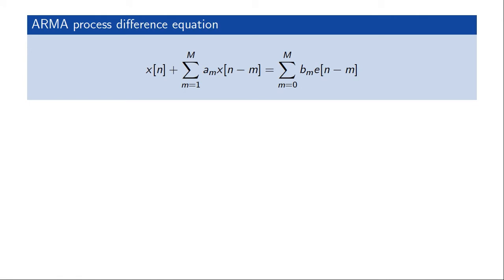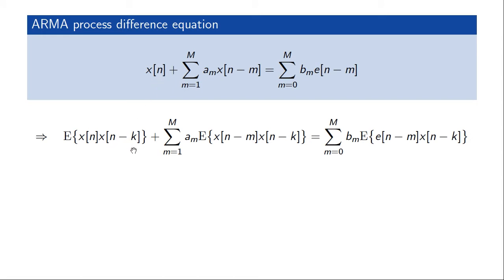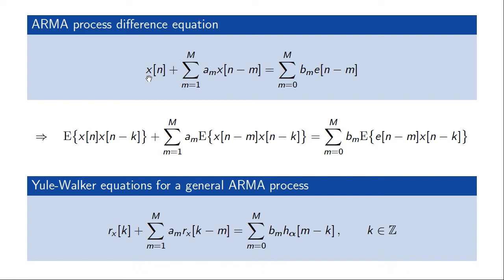In order to derive our spectral estimator, we need a way of relating the parameters of the model to the spectral properties of the process that we are observing. One way to do that is to start with the difference equation that relates the output process with the input process. This is the general difference equation of the ARMA system. In order to get statistical properties of the process, the trick is to take this equation and multiply it with a time-shifted version of the output process and then take expectation. This allows us to turn the difference equation into an equation relating the autocorrelation of the output process to the parameters of the model and the cross-correlation between the output process and the driving noise. This gives us the so-called Yule-Walker equations, which relate the autocorrelation and the cross-correlation or the impulse response to the parameters of the model.